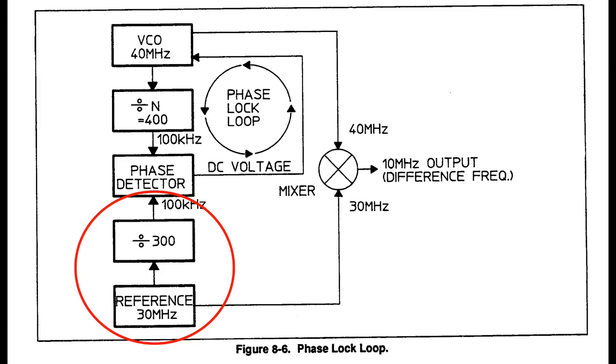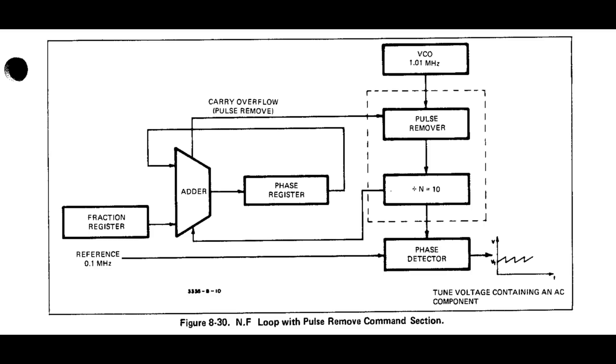The VCO is divided by a programmable number N, say 400 in our example. The output is N times 100 kHz, so 40 MHz. It is then mixed back with the reference to yield the difference, or 10 MHz. In this way, the 3325 can produce any frequency between 0 and 20 MHz in steps of 100 kHz by varying N. This is called the N loop.